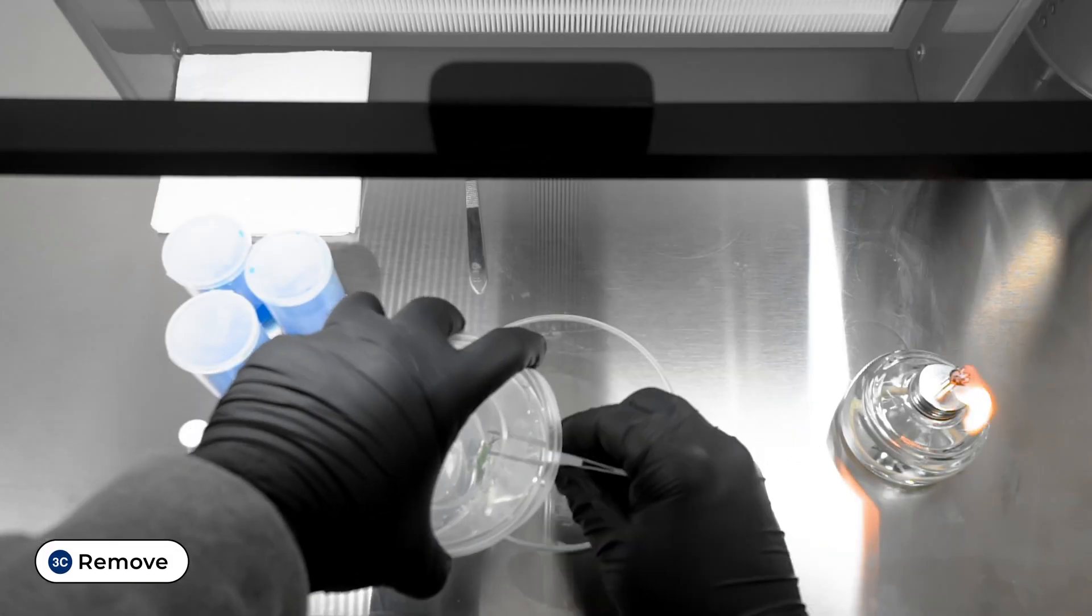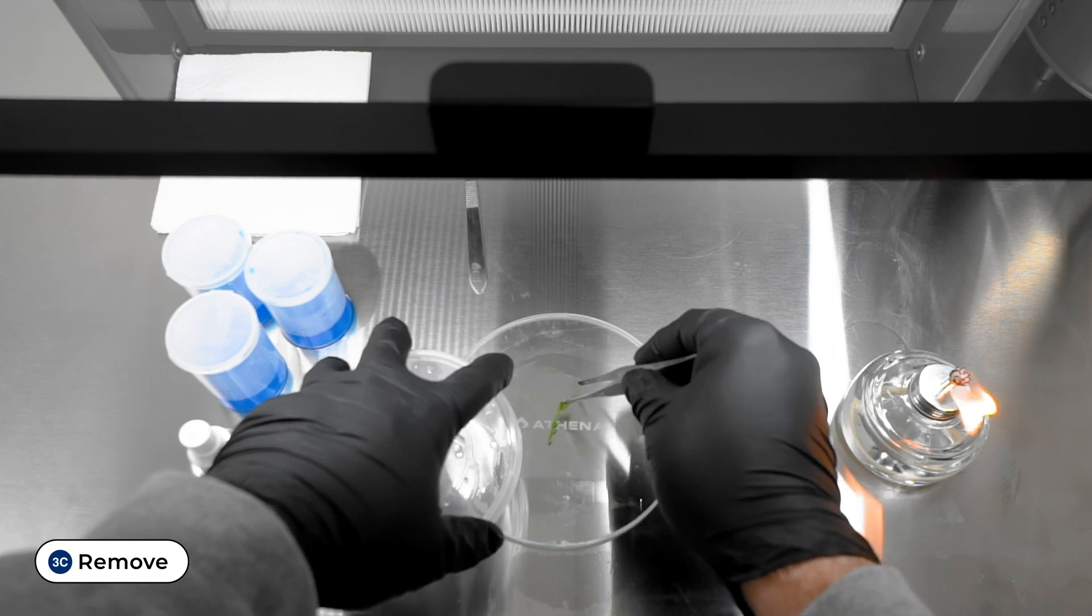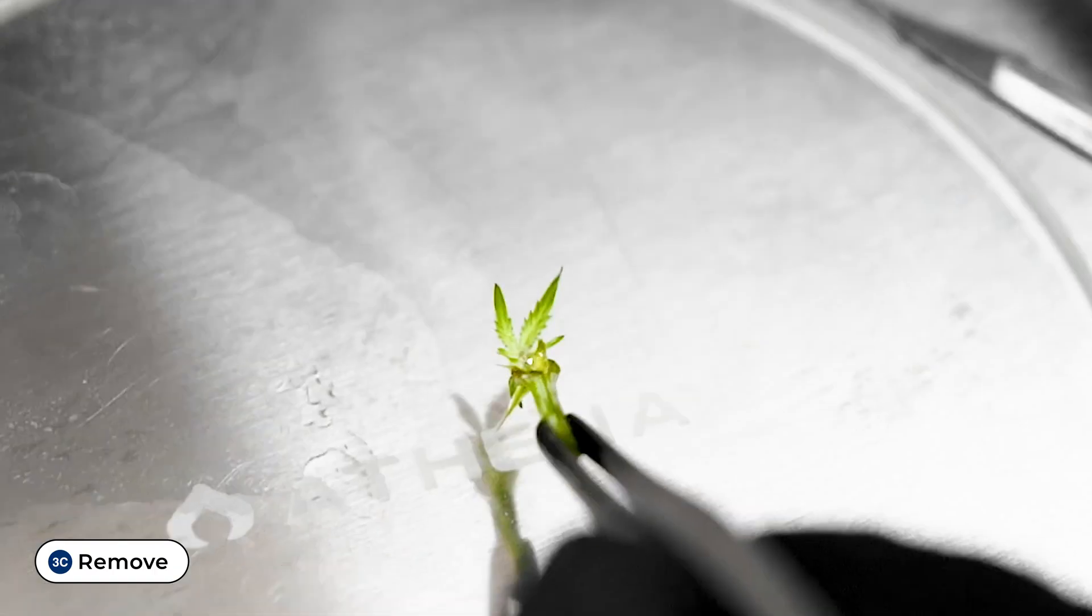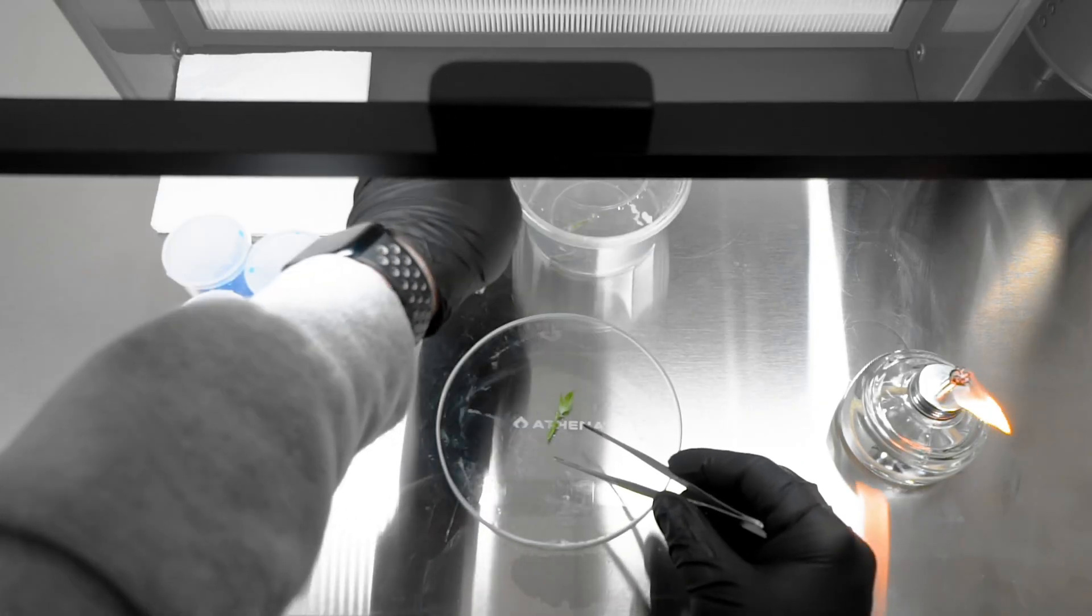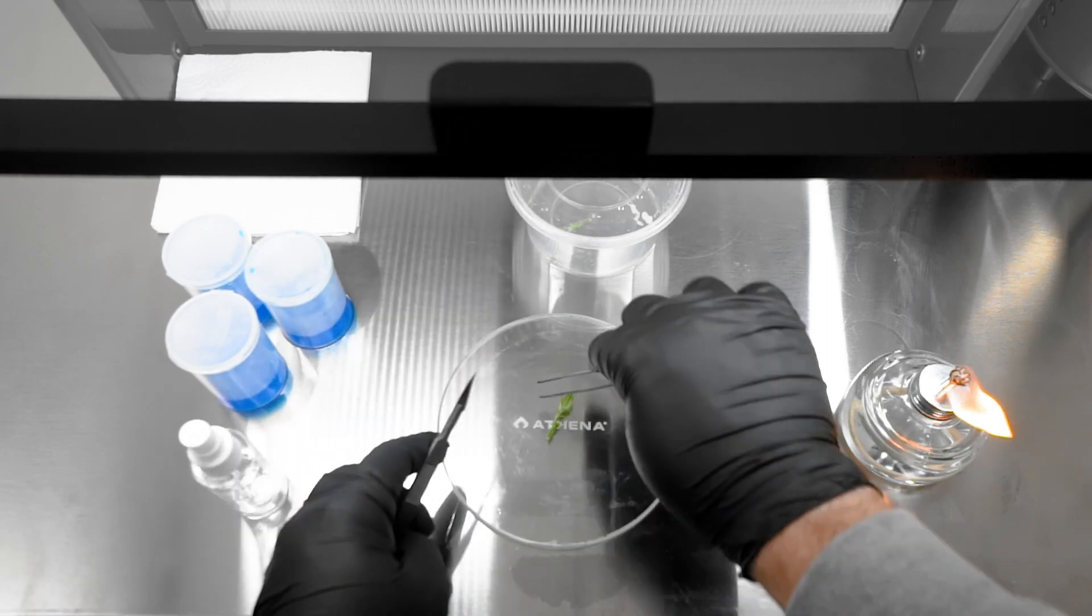Slightly open the utility vessel with the washed cuttings. Using the sterilized forceps, pull one node out at a time and place it on the sterile work surface. This is done in the flow work zone.